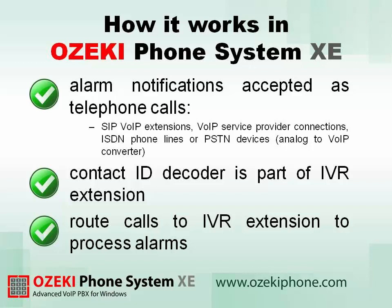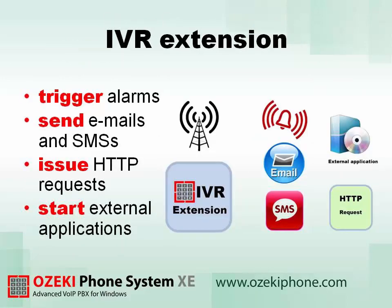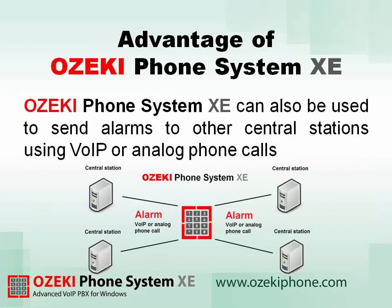To process the alarms, the calls have to be routed to the IVR extension. The IVR extension can be used to trigger alarms, send emails and SMS messages. It can also issue HTTP requests or start external applications. The advantage of Ozeki Phone System XZ is that it can also be used to send alarms to other central stations using VoIP or analog phone calls.